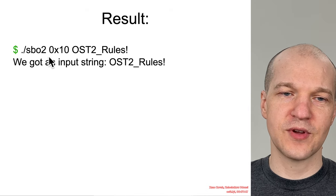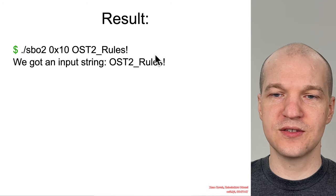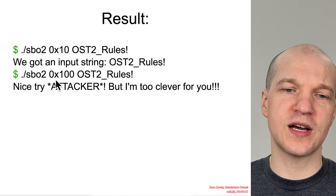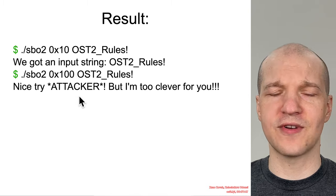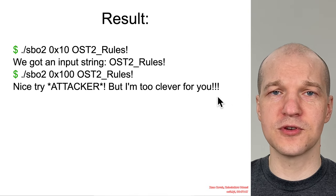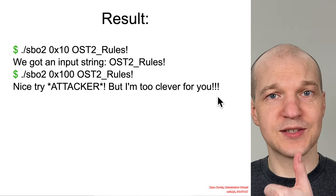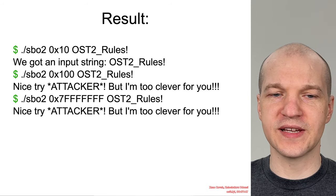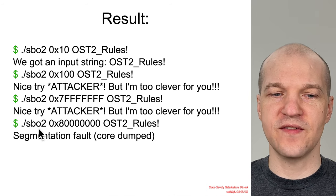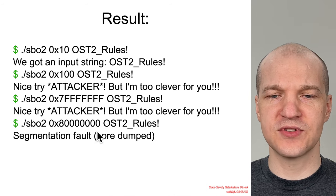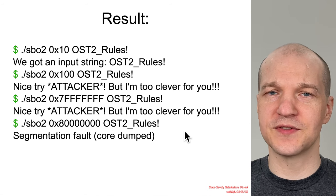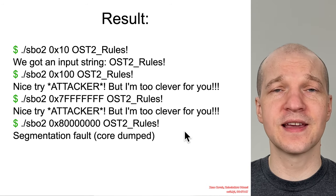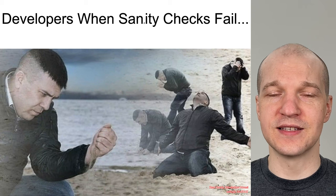The result? If we ran it with 10, it works great. Put 100 in — nice try, attacker, but I'm too clever for you. Thumbs up, success. But if an attacker passed in 8 followed by 7 zeros, then it successfully bypassed the sanity check — the insanity check — and led to a buffer overflow.